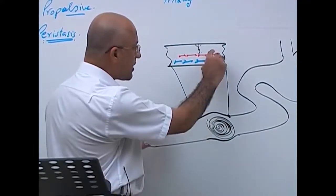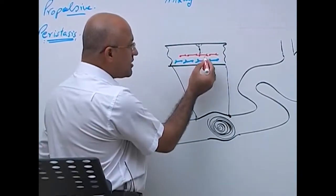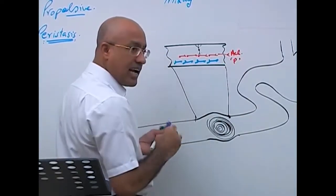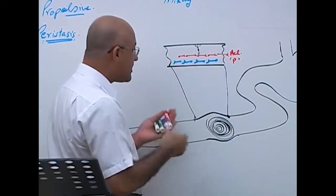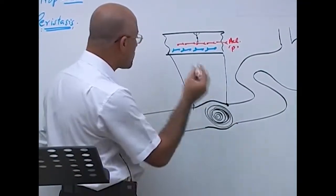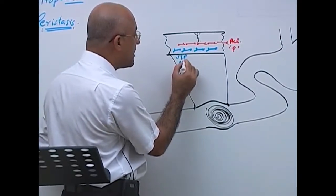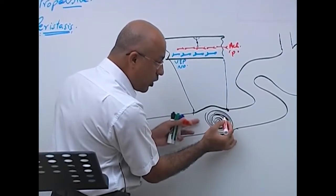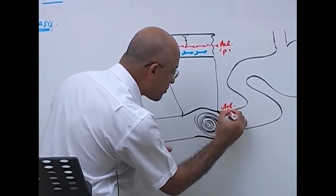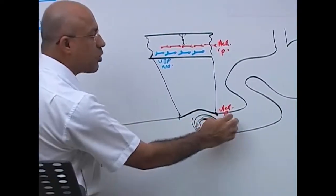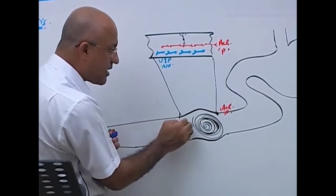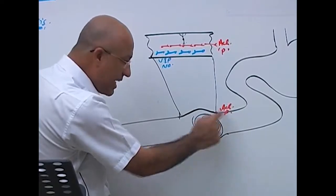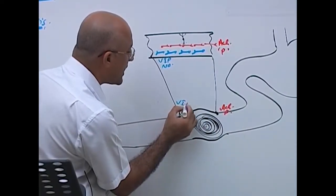When the myenteric plexus is stimulated, the ascending pathway neurons release stimulatory neurotransmitters like acetylcholine and substance P, while the descending neurons release inhibitory neurotransmitters — VIP (vasoactive intestinal peptide) and nitric oxide. So proximal to the bolus, stimulatory neurotransmitters are released, and distal to the bolus, inhibitory neurotransmitters like VIP and nitric oxide are released.